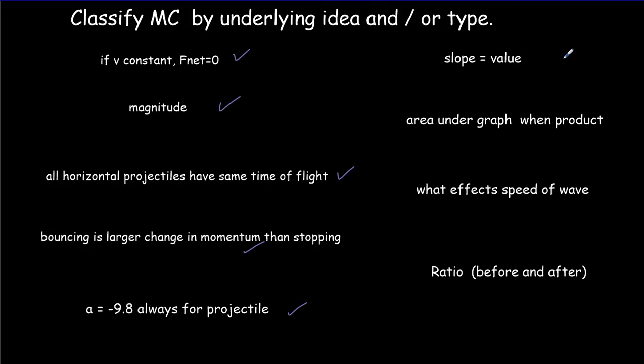The idea that slope equals values. So if you have an Xt curve and a Vt curve, the slope of the Xt curve will equal the value of the Vt curve. If you've got a product such as impulse equals force times time, and you do a graph of force times time, then the area under that force time curve is going to equal the impulse here. And we do that with other quantities as well. Change in velocity equals acceleration times time, etc. So this idea comes up a lot. What affects the speed of a wave? So we have to do something to the medium of the wave to change the speed.